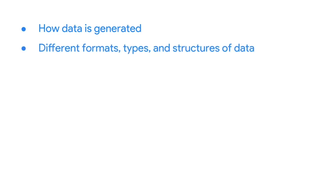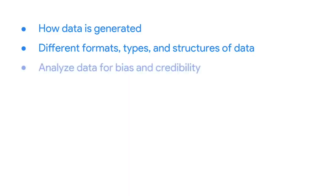In this course, you'll continue sharpening those skills. You've already heard a lot about the data analysis process steps: ask, prepare, process, analyze, share, and act. Now it's time to learn how to prepare the data. You'll learn to identify how data is generated and collected, and you'll explore different formats, types, and structures of data. We'll make sure you know how to choose and use data that'll help you understand and respond to a business problem. And because not all data fits each need, you'll learn how to analyze data for bias and credibility. We'll also explore what clean data means.